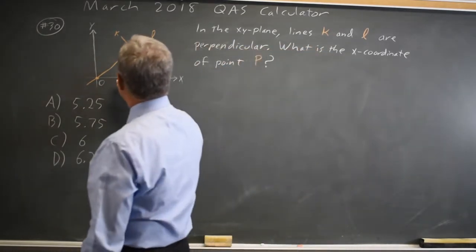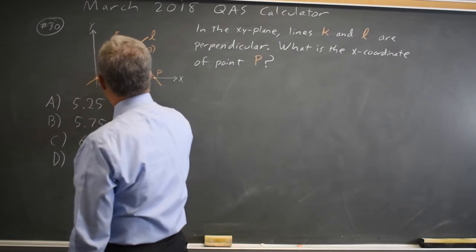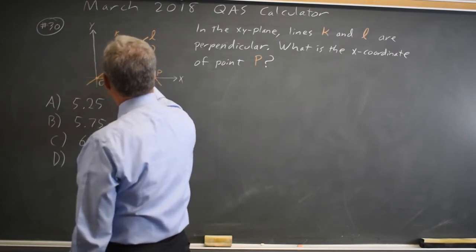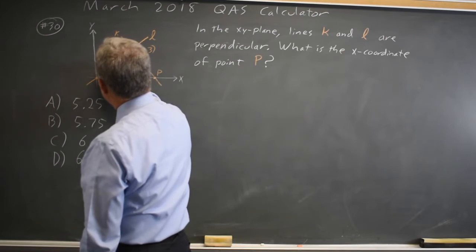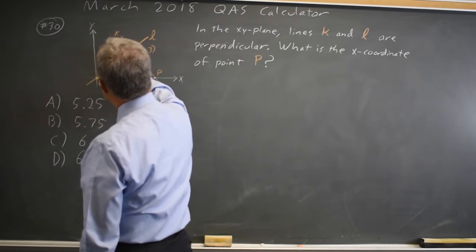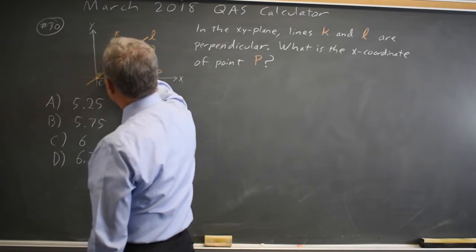Since this point is x equals 4, y equals 3, we know that the length of the hypotenuse of this triangle is 5.